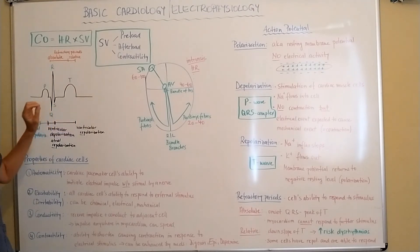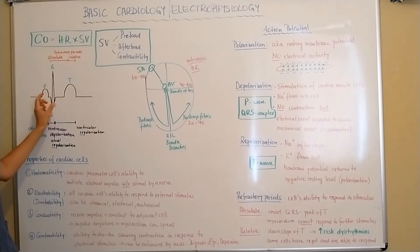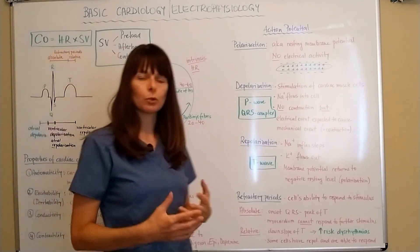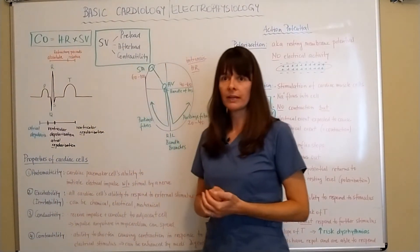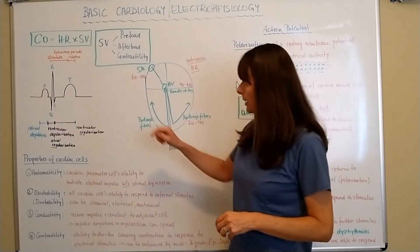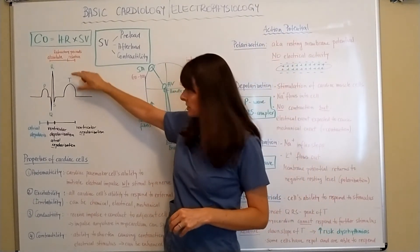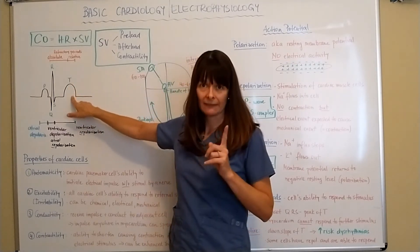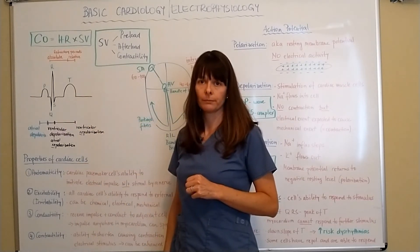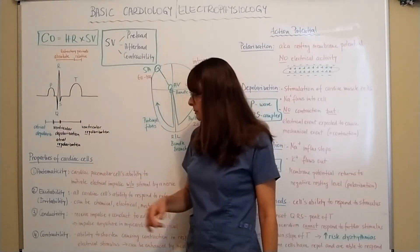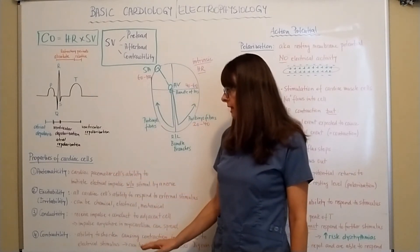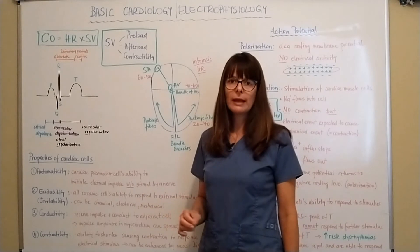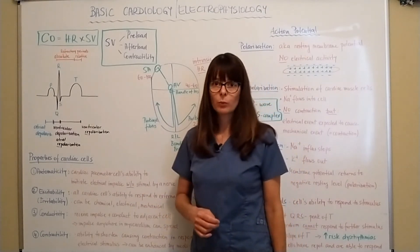When an electrical impulse hits during the absolute refractory period, the ventricle is still depolarizing and we can't expect it to contract again. However, if an additional impulse comes in through the relative refractory period — through this very short downward slope of the T wave — that is why dysrhythmias can occur. Understanding these properties of cardiac cells is essential to understanding the different dysrhythmias.